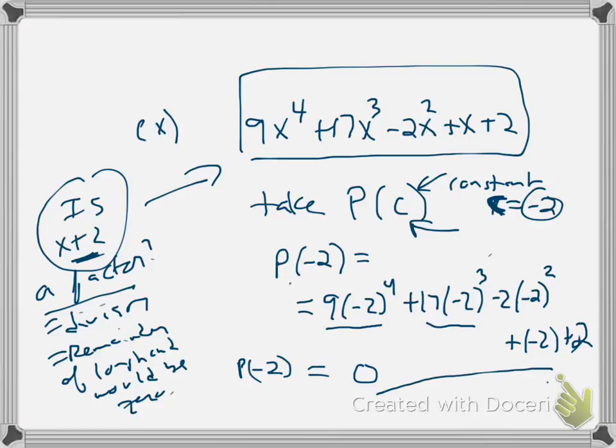So what I'm getting at is p of negative 2 comes to be 0. And the factor theorem says that if the polynomial function evaluated at a constant comes to be 0, then you know that constant is a zero of the polynomial and you know that x minus the constant. So therefore, x minus the constant, x minus negative 2, is a factor.